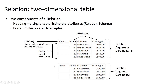We have our relation heading here, which is our schema. This relation has a degree of three, because there are three attributes, and a cardinality of four, because there are four tuples.